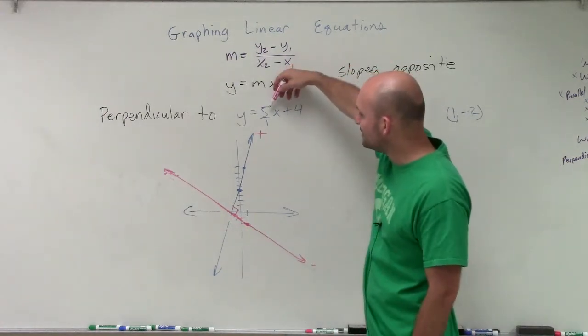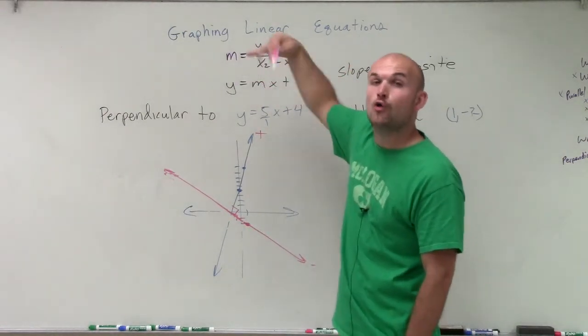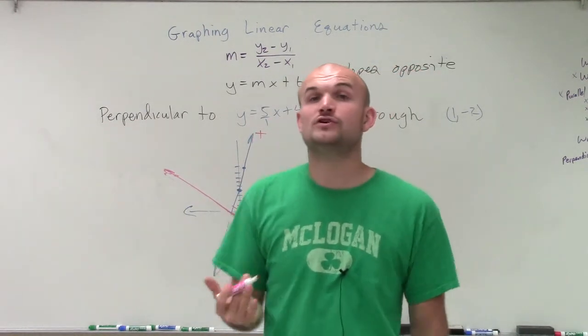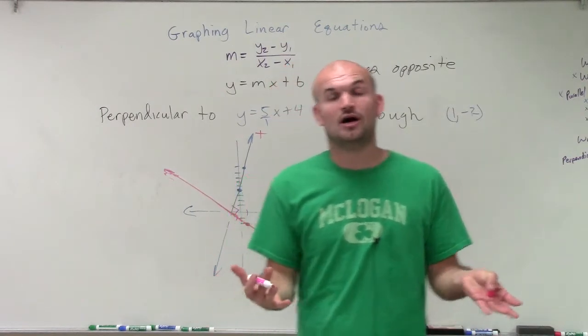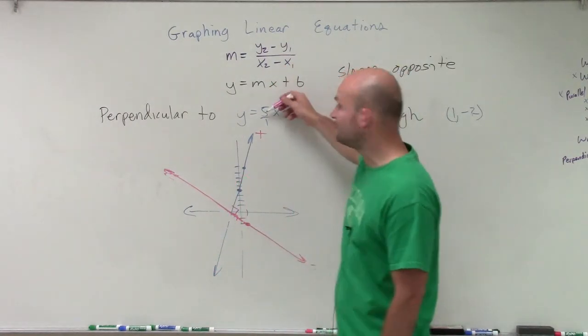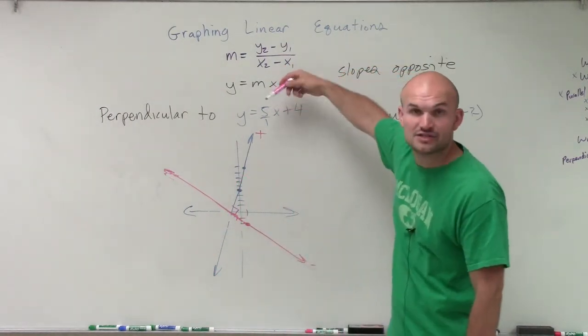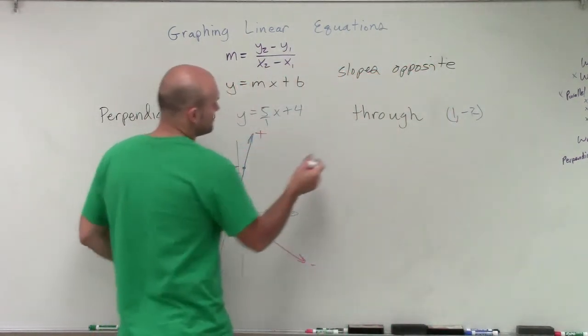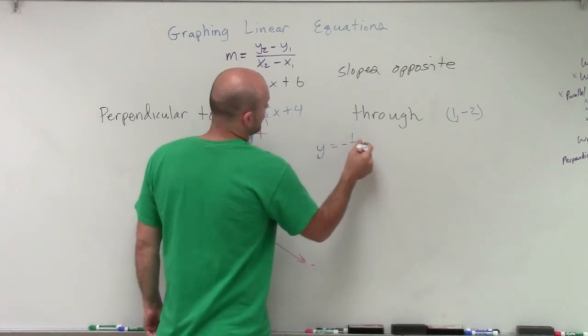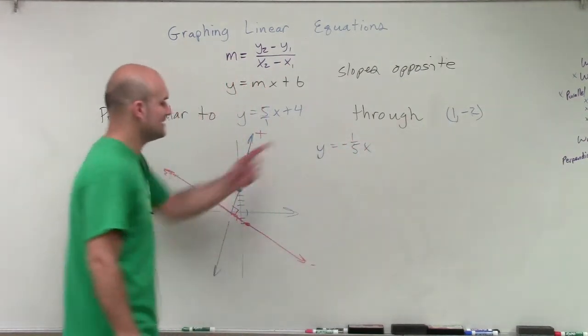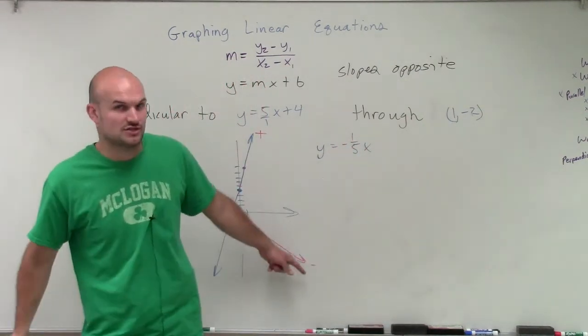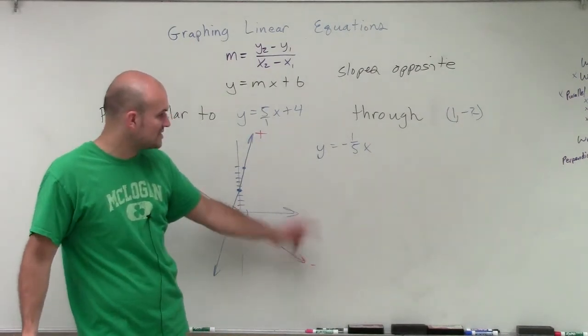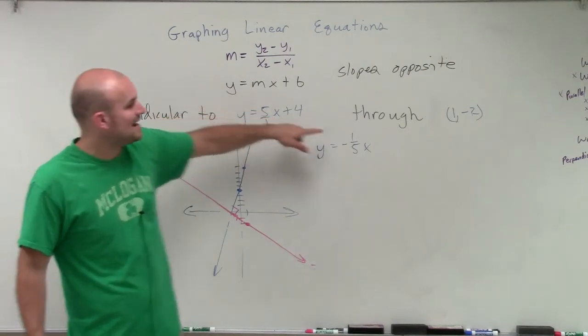Now notice when I graph this, I wrote this as 5 over 1. And that was very important because a lot of students will get confused when we say, well, what's the reciprocal of 5? Well, the reciprocal of 5, remember, we can write 5 as a fraction as 5 over 1. So therefore, the reciprocal is going to be y equals a negative 1 fifth x.